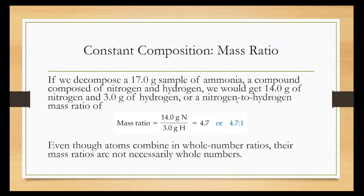If we decompose 17 grams of ammonia, which is NH3, a compound composed of nitrogen and hydrogen, we would get 14 grams of nitrogen and 3 grams of hydrogen for a nitrogen to hydrogen ratio of 4.7 to 1.